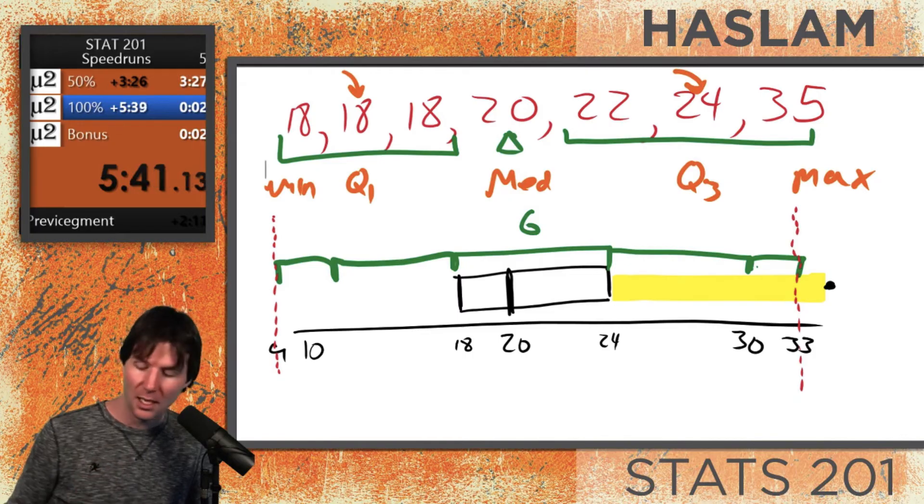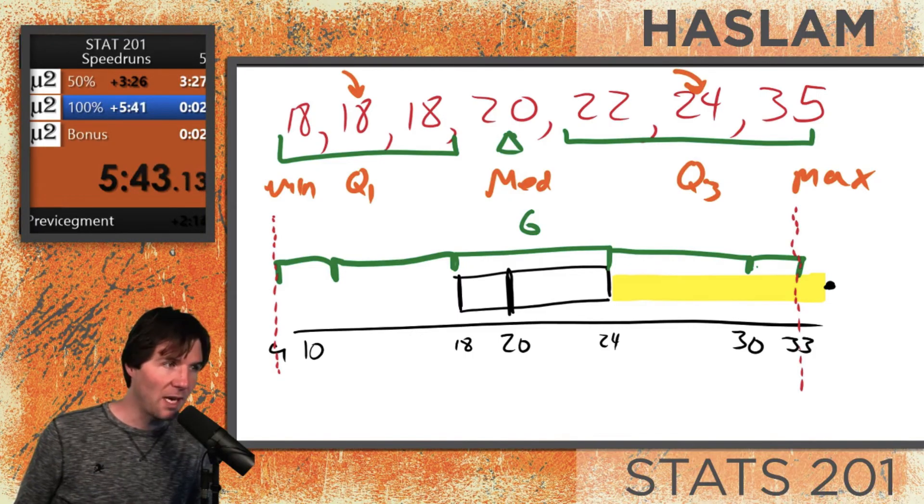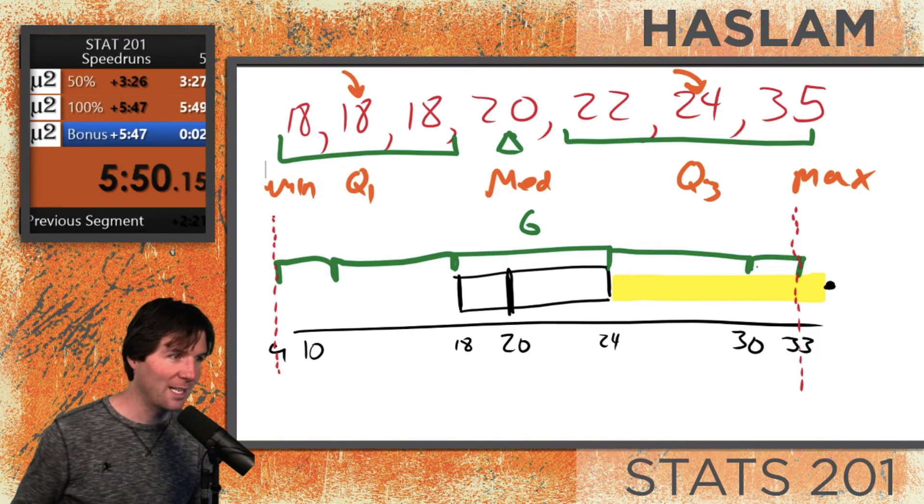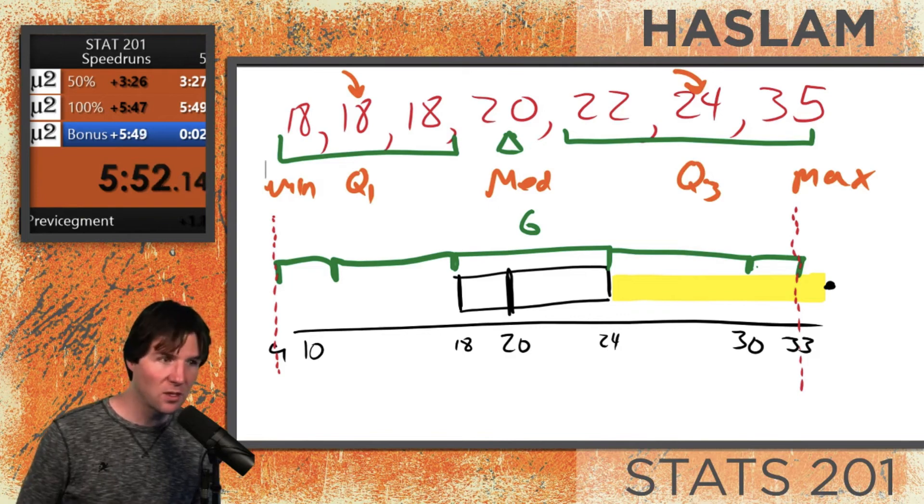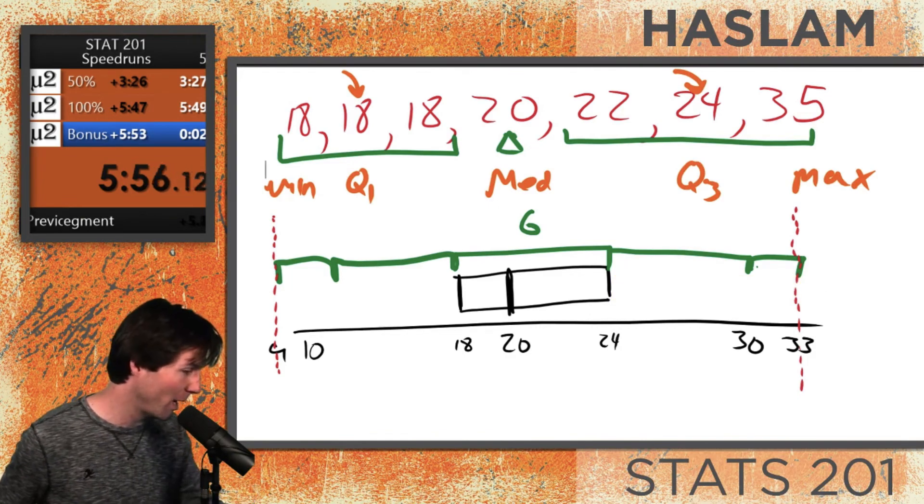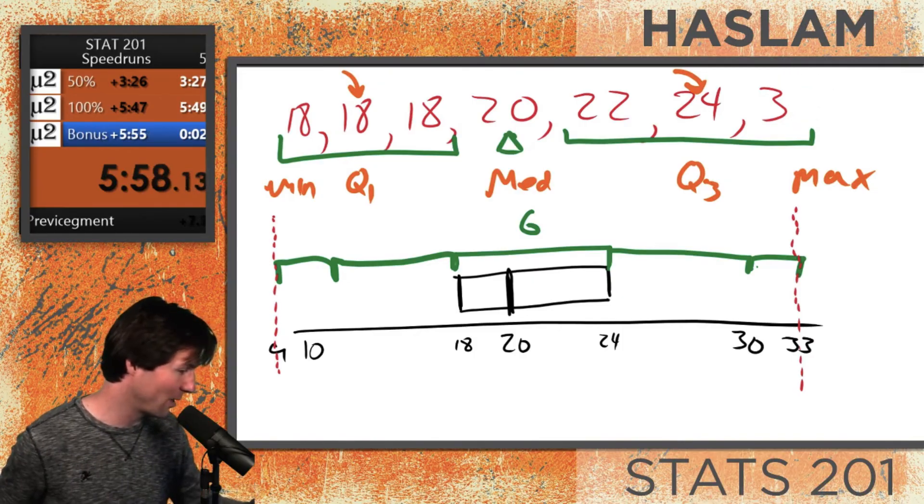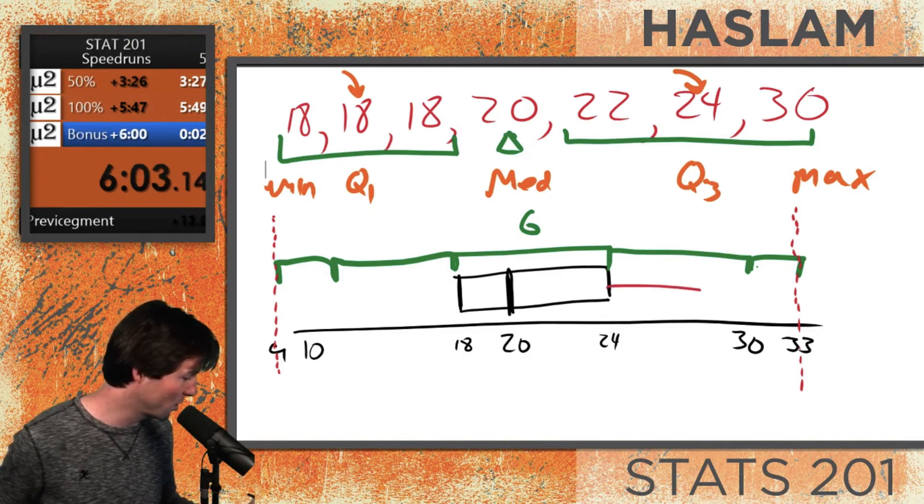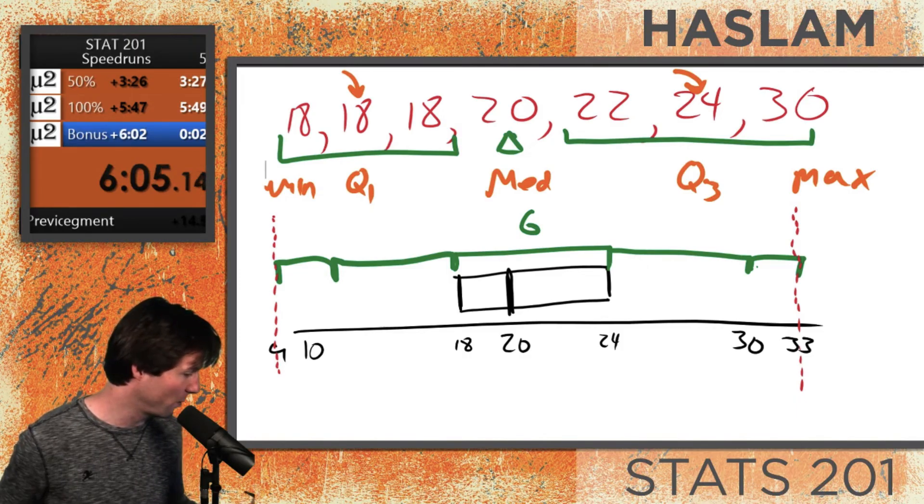Did everyone see what happened right there where I changed up what the data looked like? When we do this right here, it is outside that range of where the fences are. When you draw it, especially in Jump, it won't show you those fences. Hopefully that explains what the fences are. They just tell you where outliers are. If we change our data back right here and put this back to 30, this point now exists in this range.